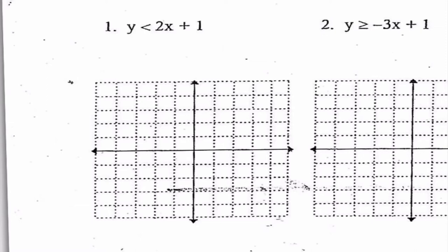We have y is less than 2x plus 1, so I know my slope is 2 because this is in slope-intercept form. My m value is whatever the x coefficient is. My y-intercept is 1, which means we have an ordered pair of (0, 1). So I'm going to go up to (0, 1). A slope of 2 means I go up 2 and to the right 1, or down 2 to the left 1. I'm going to draw a dashed line — the reason it's dashed is because it says less than, not equal to.